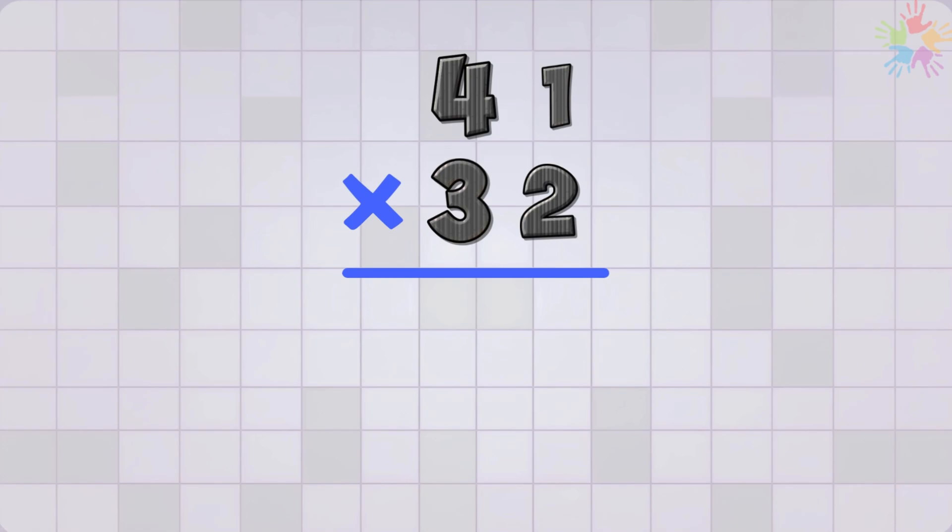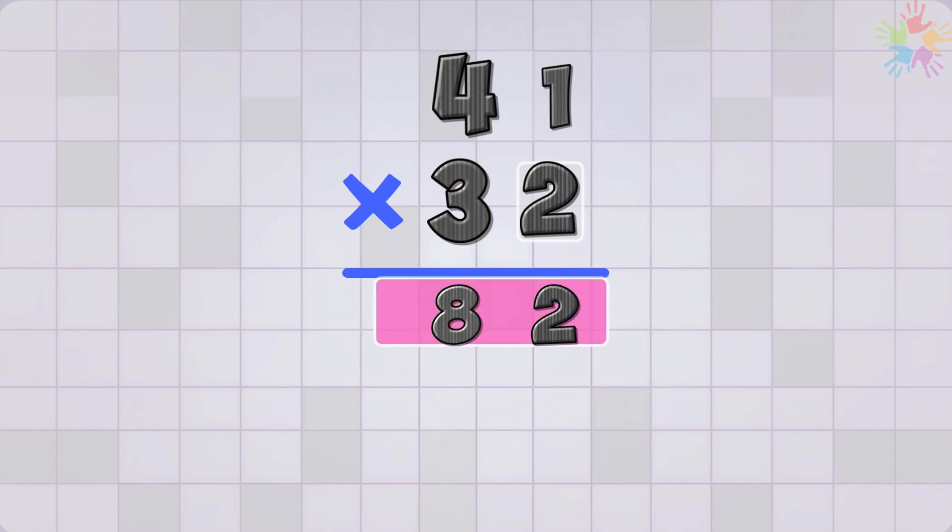We begin with the number in the ones place, which is 2. Multiply it with every digit in 41 starting from the right. 2 times 1 is too easy, right? Then 2 times 4 is 8. No carrying this time. So our first row is 82.